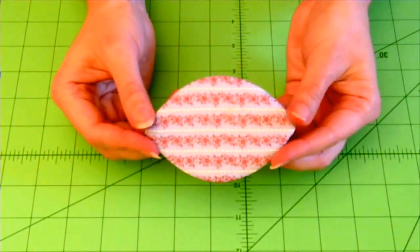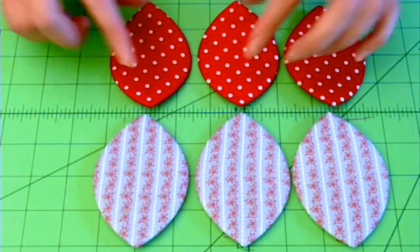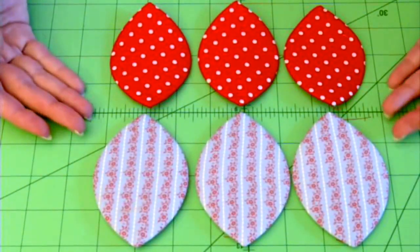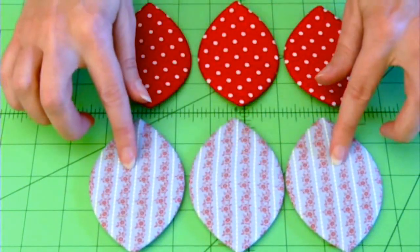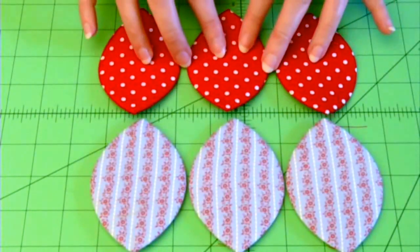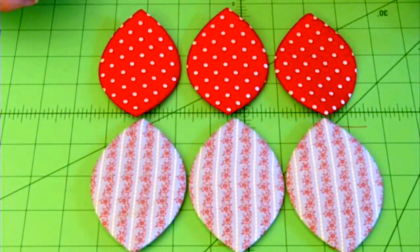And there's my first finished shape. And you'll actually repeat that process five more times so that you have three pieces for the outside of your case, and three pieces for the inside of your case.